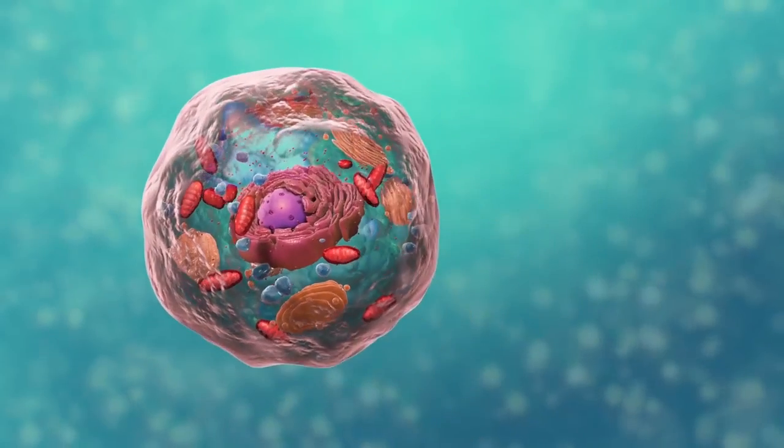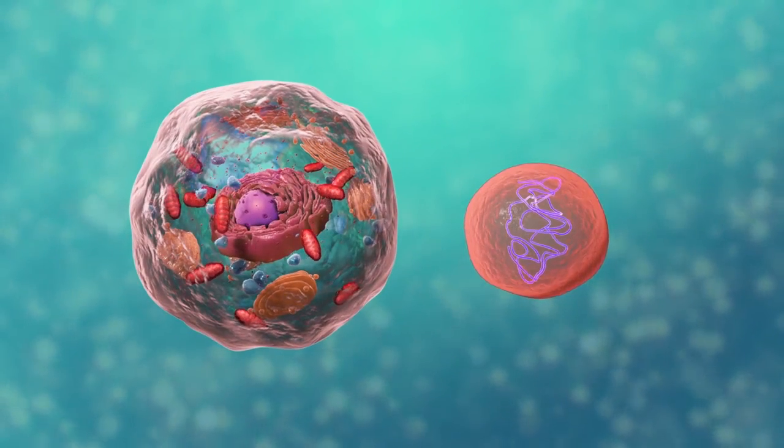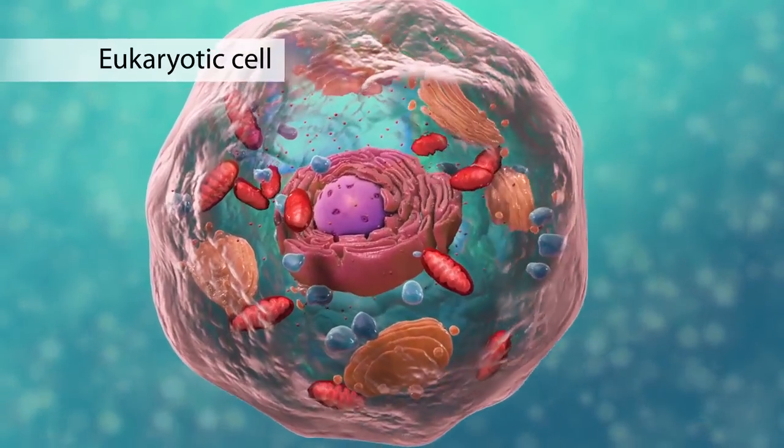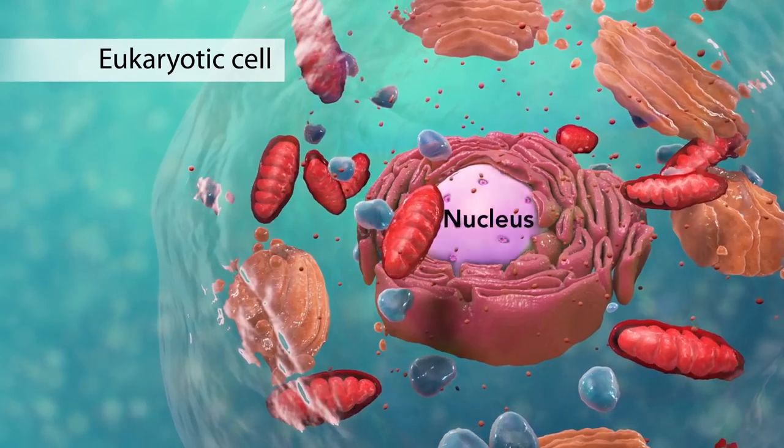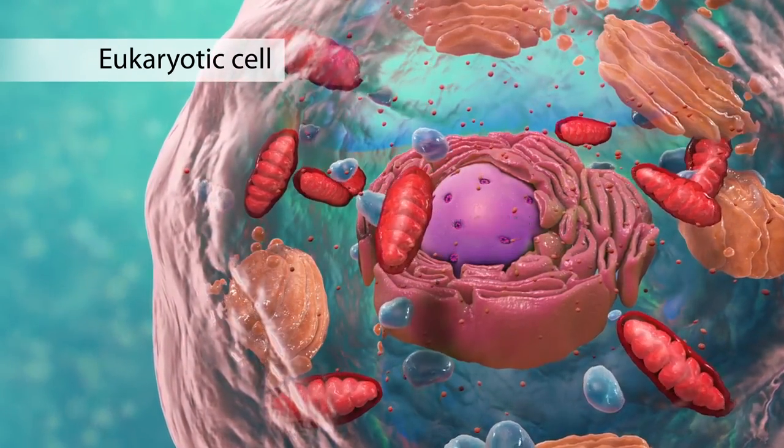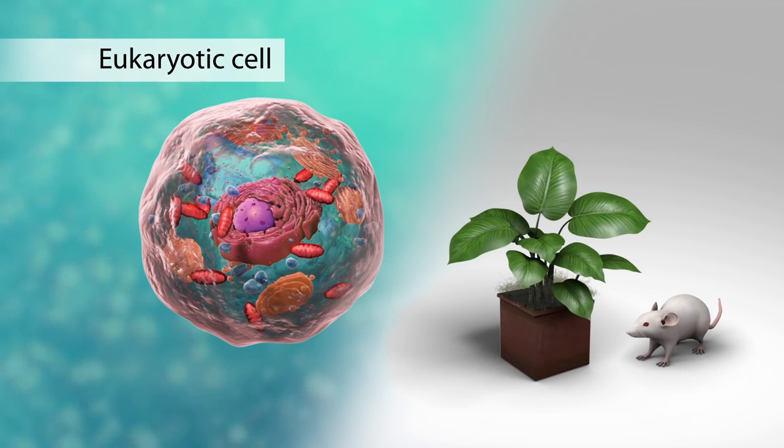There are two broad categories of cells. The first category is eukaryotic cells. They have organelles which include the nucleus and other special parts. Eukaryotic cells are more advanced complex cells such as those found in plants and animals.